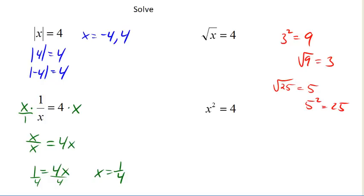So in this problem, I can square both sides of the equation. The square root of x squared, the square undoes the square root and just leaves me with x. 4 squared is 16.